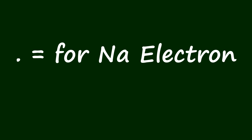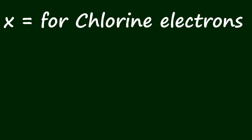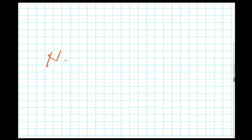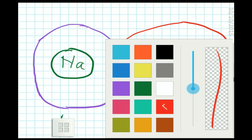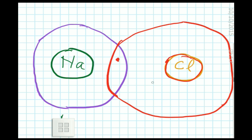Before showing the dot and cross notation, we have to mention a key note. We will use a dot to represent the sodium electron and a cross to represent the chlorine electron.